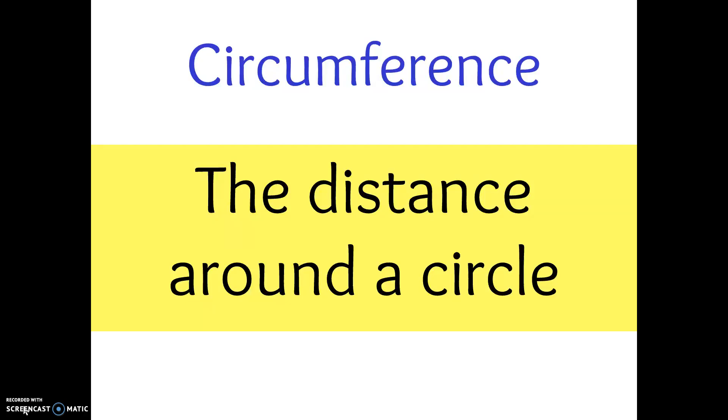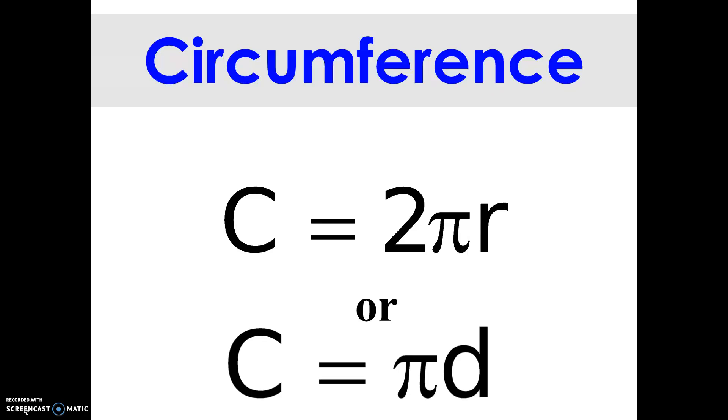Circumference, I know you know this one. Circumference is the distance around a circle. Here are circumference formulas. Circumference equals 2 times pi times r, which is the radius, or circumference equals pi times diameter. Again, that should be a formula you're pretty familiar with.